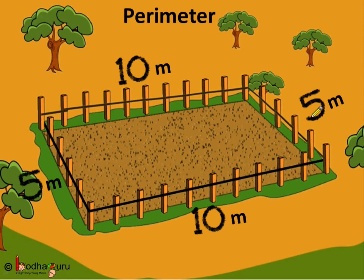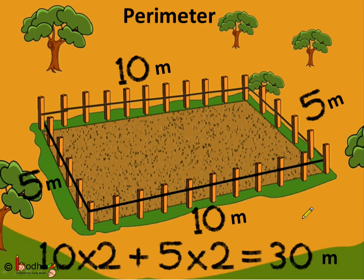And how did we calculate the perimeter? It was 10 plus 10 and 5 plus 5, that is 2 times the length and 2 times the width. So the perimeter was equal to 10, that is the length multiplied by 2, plus 5 which is the width multiplied by 2, and we got the answer as 30 meters. So if the length and the width of rectangle is given we can calculate the perimeter as twice of length plus twice of width to get the perimeter.